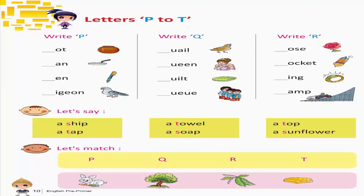Letters P to T. Write P. Write Q. Write R. Let's say: A ship, A tap, A towel, A soap, A top, A sunflower. Let's match.